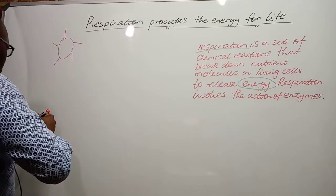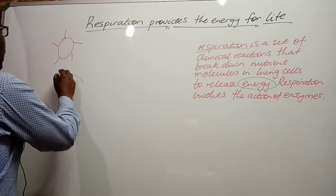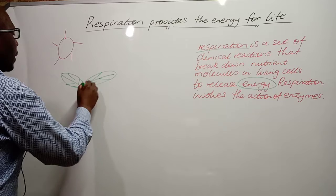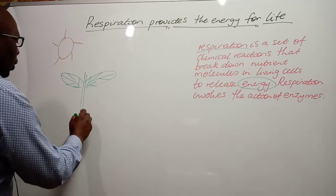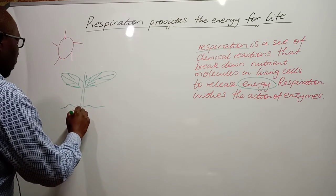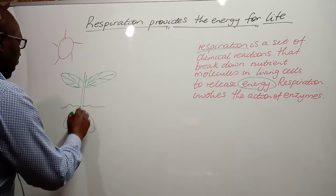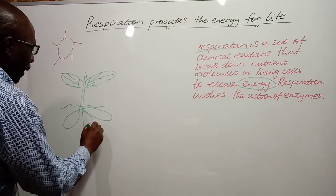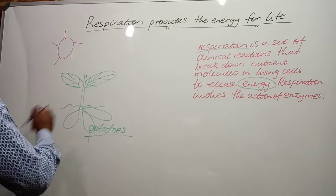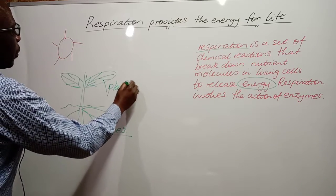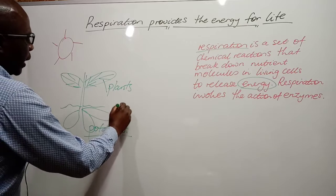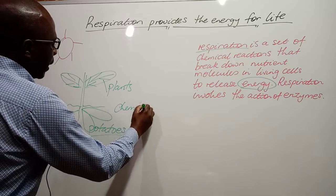Let us say this is the Sun, shining on a plant. Green plants are able to convert the light energy supplied to them and store it as chemical energy — for example, in the form of tubers such as potatoes.